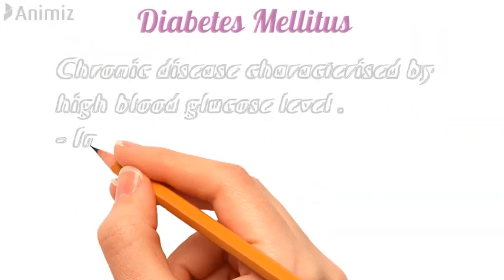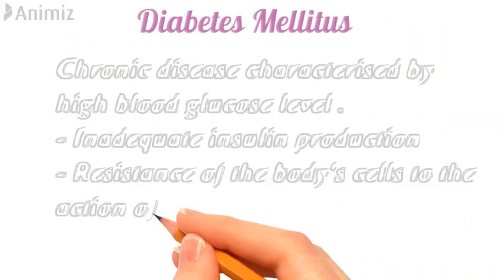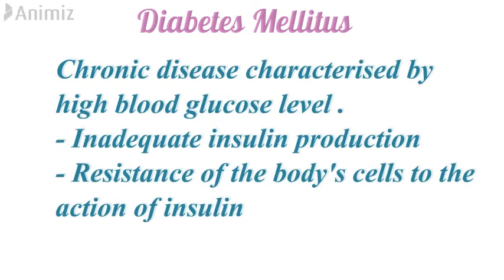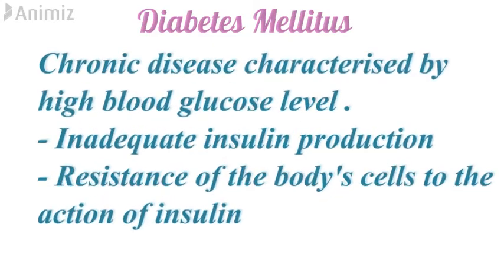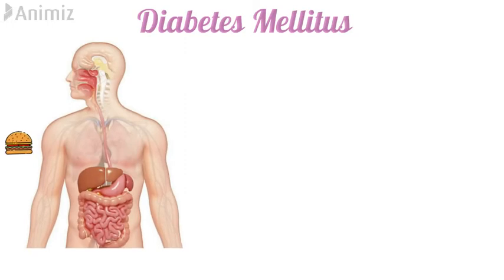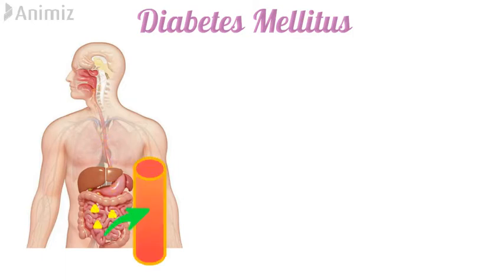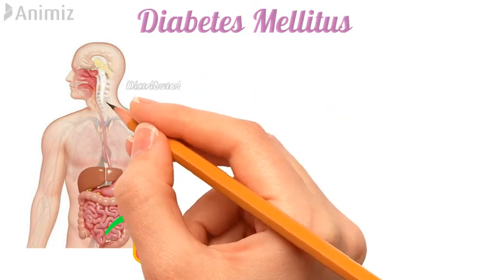Diabetes mellitus, or diabetes, is a chronic disease characterized by high blood glucose level, which can result from inadequate insulin production or resistance of body cells to the action of insulin. Whenever we eat any food, upon its digestion, carbohydrate molecules are broken down into glucose molecules which are then absorbed by the blood vessels and transported throughout the body.